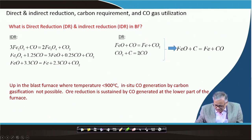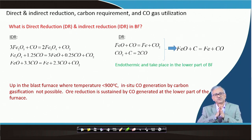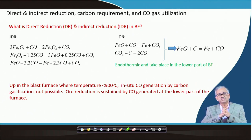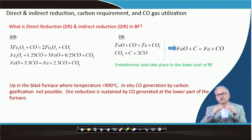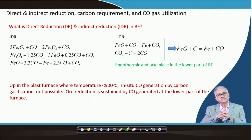Direct reduction is endothermic, because the carbon gasification reaction CO₂ + C → 2CO is highly endothermic, and it takes place in the lower part of the blast furnace where temperature is greater than 900°C. There, in-situ CO generation takes place, and that reaction is called direct reduction because carbon is directly participating.